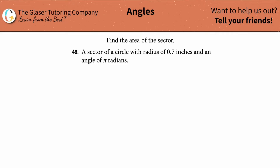In this problem we're going to be finding the area of a sector. A sector is simply just part of a full circle. It says we have a sector of a circle where the circle has a radius of 0.7 inches and an angle of pi radians, so the sector has that angle of pi radians.